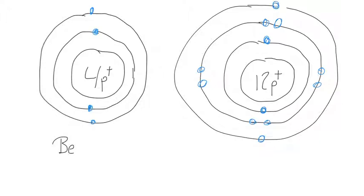So here we have our model for magnesium, and you'll notice that both elements have two electrons on their last shell, so that's your group number.